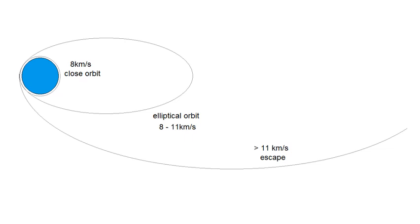If you fired your cannonball at 8 km/s you'd go into a close circular orbit. Between 8 and 11 km/s you'd go into an elliptical orbit — much like the orbit of comets — but it wouldn't escape and would eventually come back. At more than 11.2 km/s the cannonball would escape entirely and you'd never see it again.